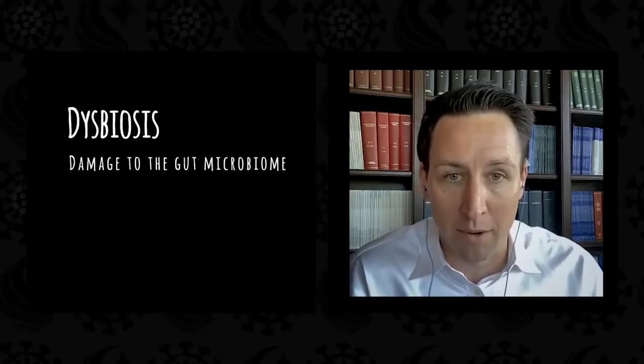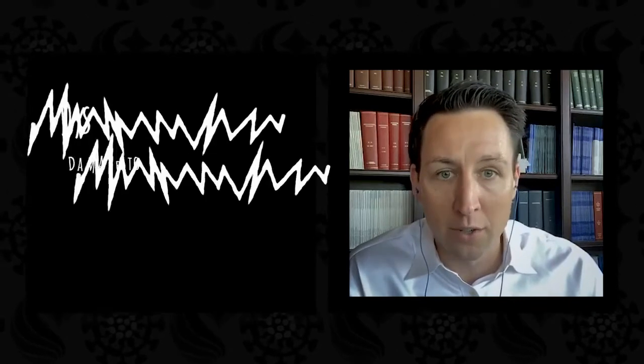For example, if you take the idea of dysbiosis — where some people will refer to this on the internet as leaky gut — we're talking about damage to the gut microbiome, which includes breakdown of the epithelial layer, the wall around the colon, breaking down the cells and opening them up, which allows toxins to sneak into the bloodstream. If you want to fix that, short-chain fatty acids are the solution. In chapter three of the book, I lay out how they can reverse each step involved in dysbiosis.